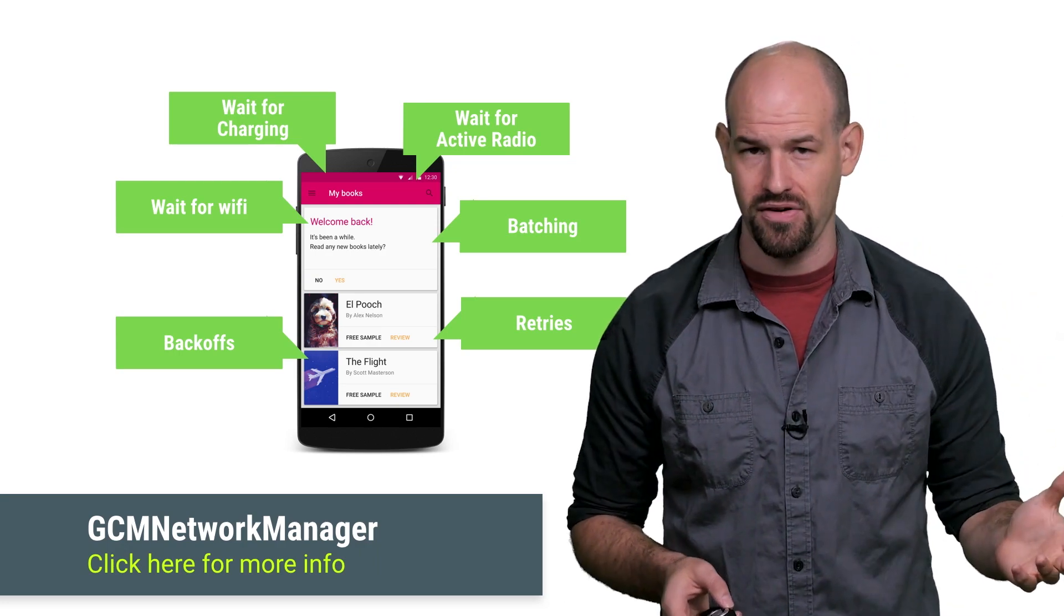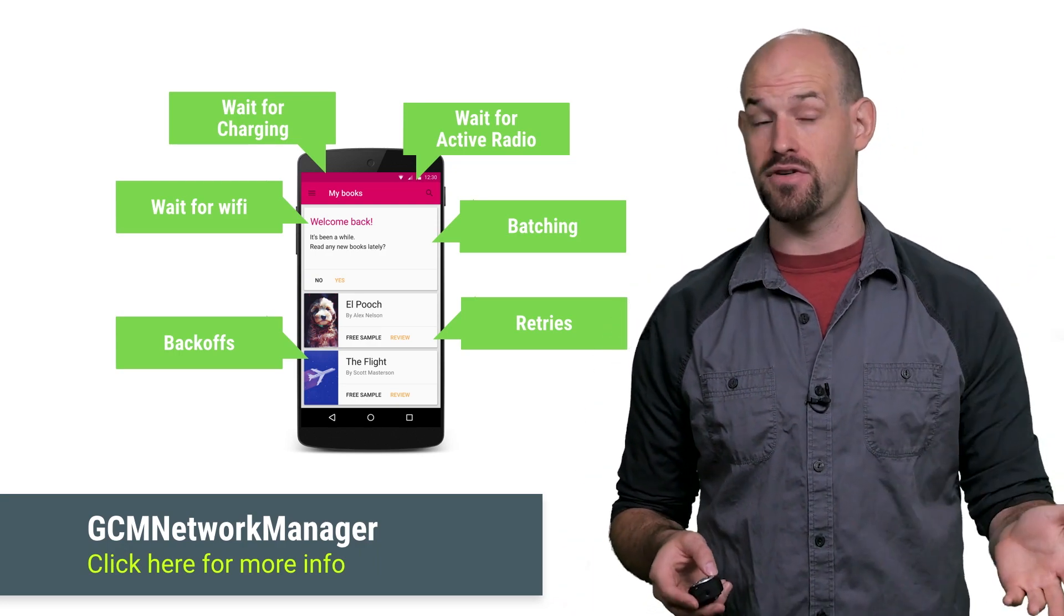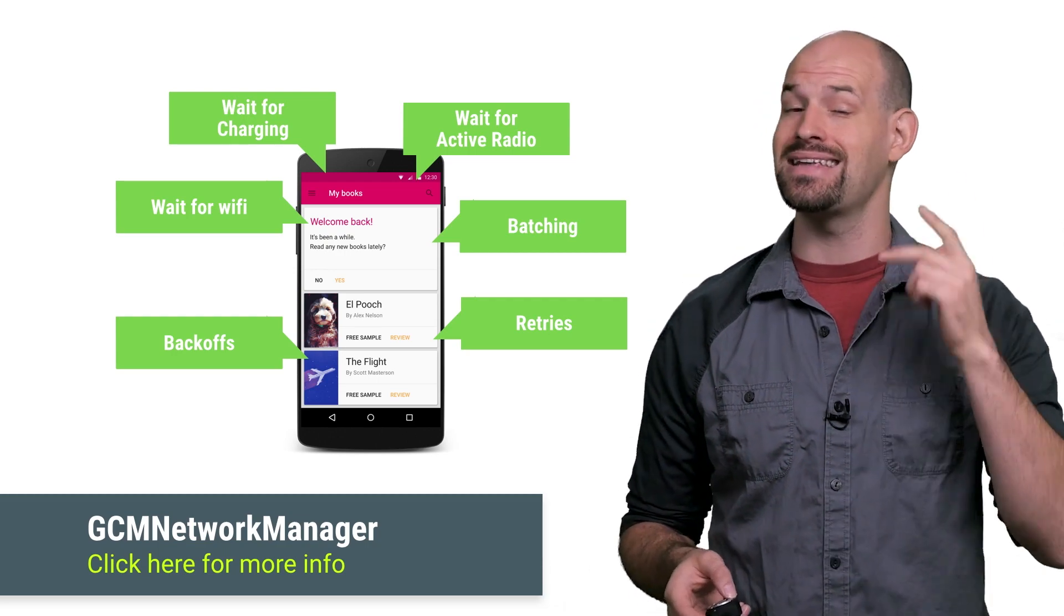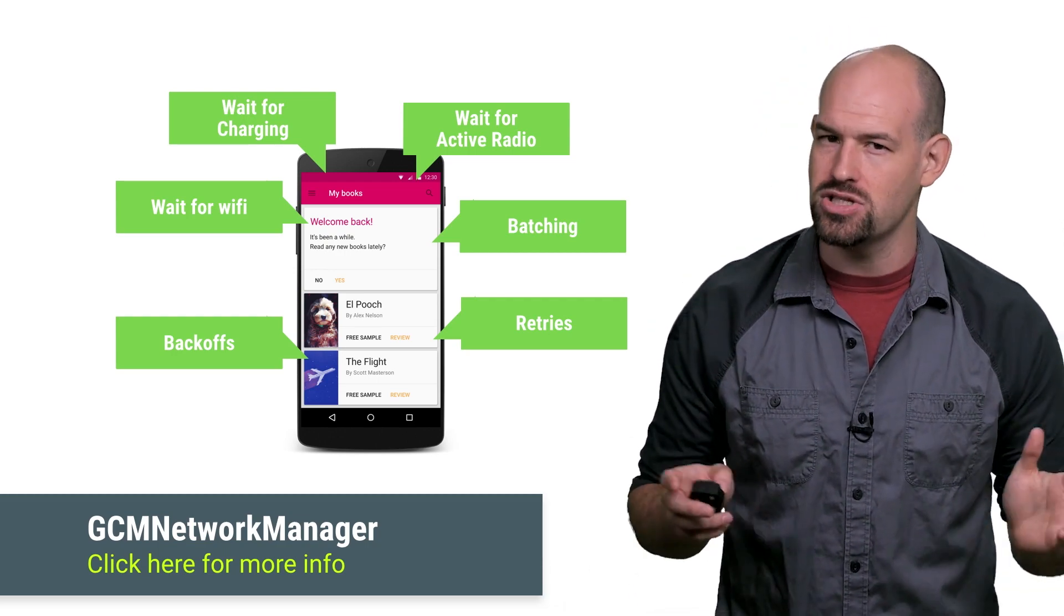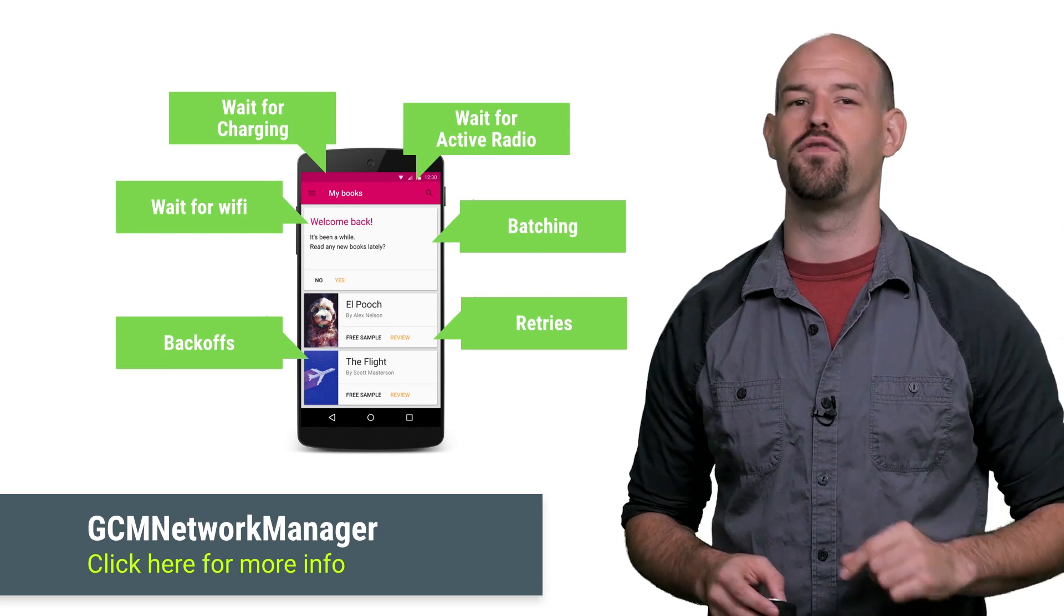This greatly simplifies the implementation of common patterns, such as waiting for network connectivity, network retries, and exponential backoff. Basically, it's all the stuff you need with a single helpful API.